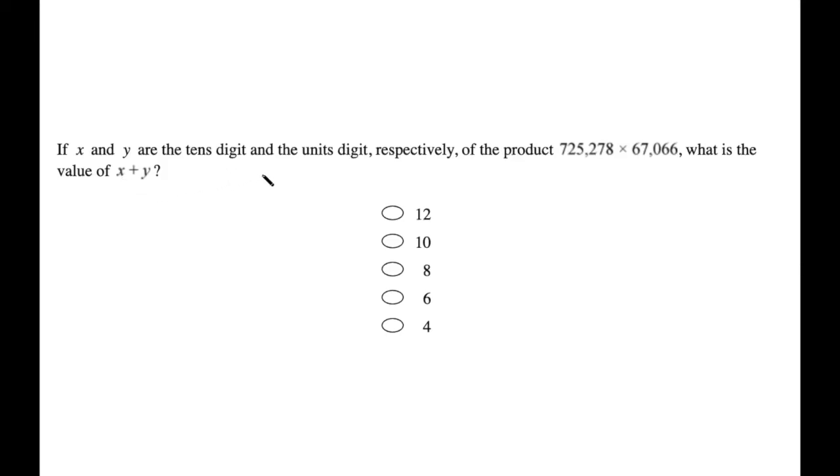If x and y are the tens digit and the units digit, respectively, of the product 725,278 × 67,066, what is the value of x plus y?